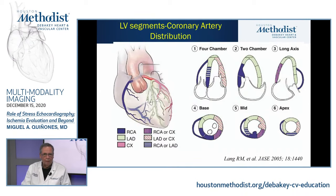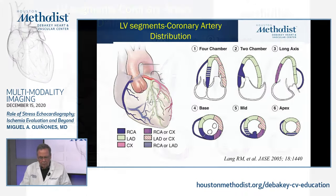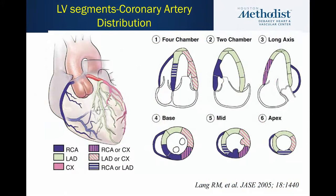For many years, wall motion has been classified with a numerical score using the 17-segment model corresponding to different coronary distributions. This beautiful color-coded slide shows the regions of the left anterior descending, circumflex, and right coronary artery — with about 10% of people having a dominant circumflex taking the role of the RCA.